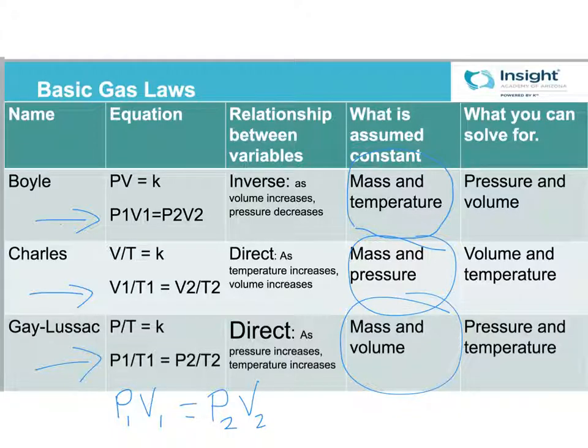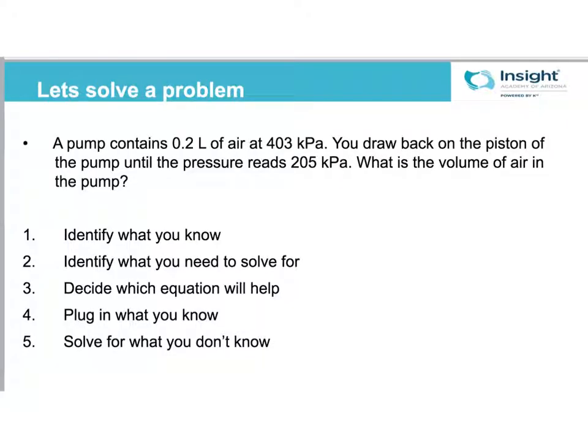So let's look at a problem. Alright, so we have a pump at 0.2 liters of air at 403 kPa. You draw back on the piston of the pump until the pressure reads 205 kPa. What is the volume of air in the pump? So what I have on here is just a general thought process you want to go through when solving these. First, identify what you know. And that's where you look at the numbers that you are given. So we've got 0.2 liters, 403 kPa, 205 kPa. Liters is volume. So that's going to be our V1. And 403 kPa, that's kilopascals, so that's going to be our pressure, and that's tied with this volume. So that'll be pressure one. And then here we draw back on the piston until the pressure reads 205. So we're changing the pressure. We know pressure two.